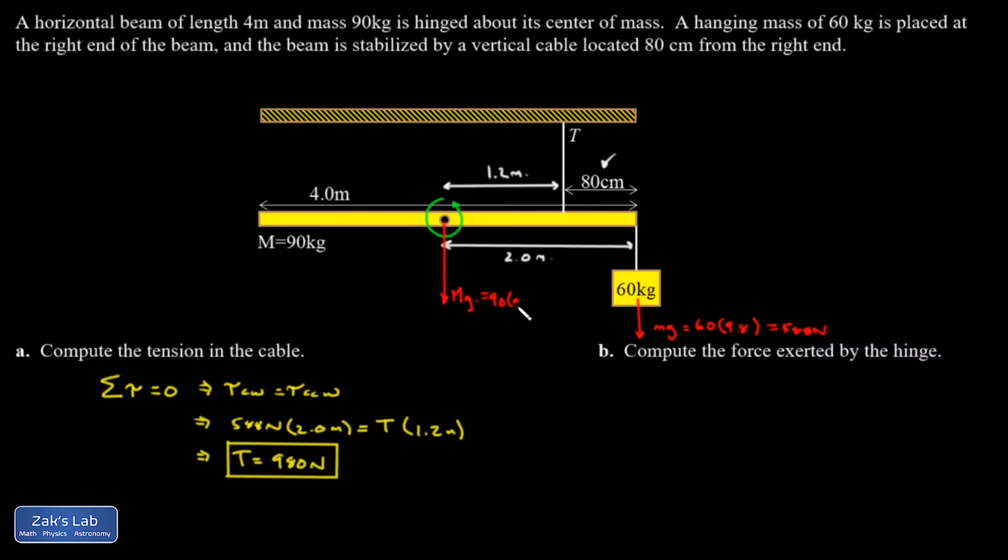Plugging in the numbers, 90 for the mass, 9.8 for G, I get 882 newtons acting downward at the center of mass. And then we run into kind of an interesting question. Does the hinge force point up or does it point down?